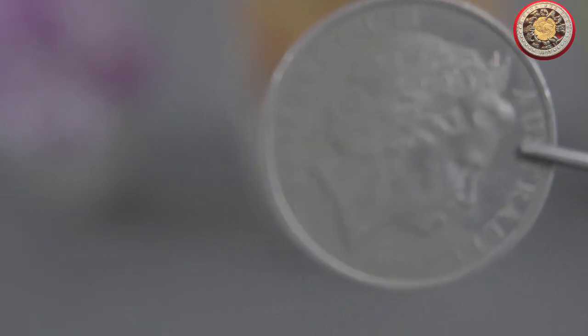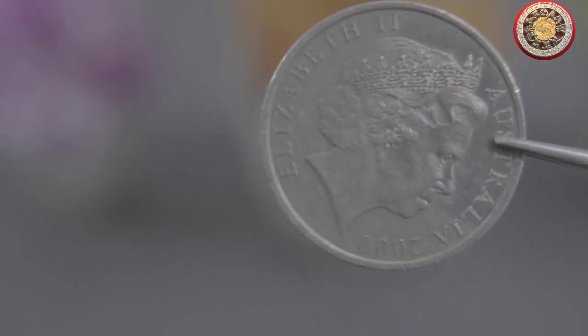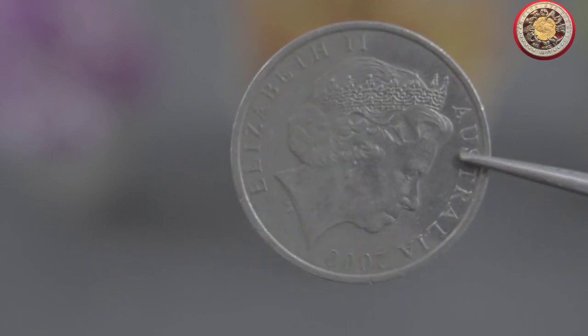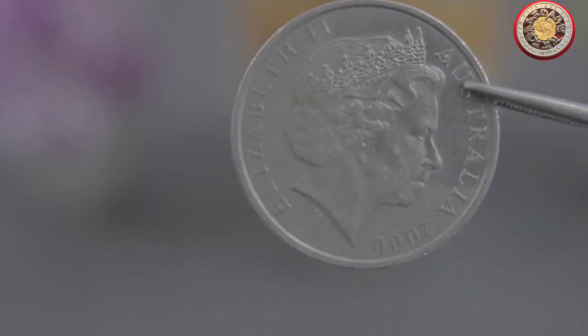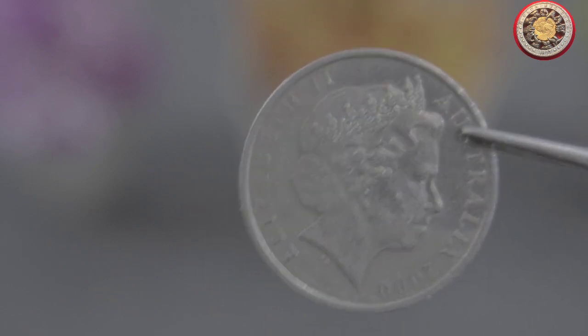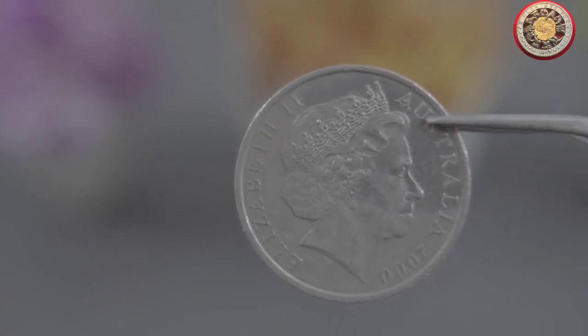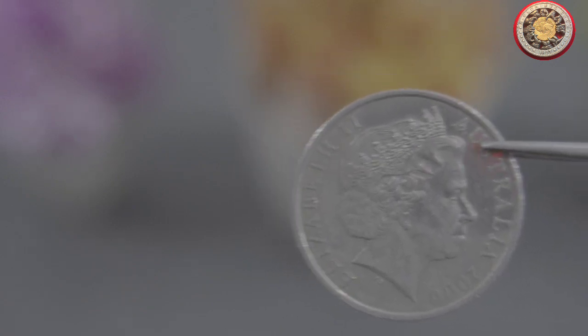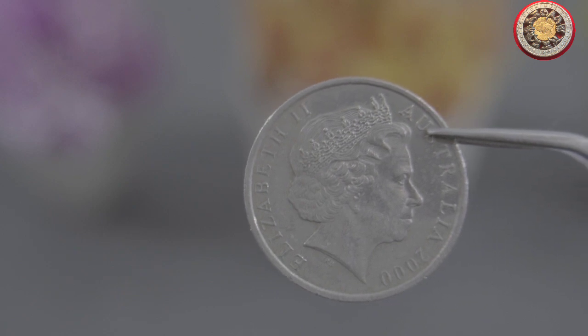So, you can see that this coin is not just a piece of currency, but a representation of the rich history and culture of Australia. And as we know, the history of a nation is closely tied to the history of the world. Australia has a fascinating history that dates back thousands of years, and this coin is just one small piece of that story.